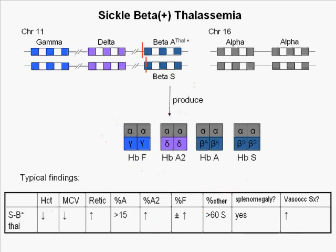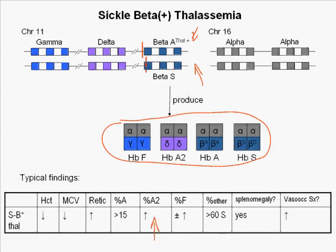In sickle beta plus thalassemia, one beta globin gene carries a mutation that reduces its production of beta globin and the other has the sickle point mutation. Four hemoglobins are produced: slightly elevated amounts of hemoglobin A2, variable but somewhat elevated levels of fetal hemoglobin, relatively small amounts of hemoglobin A, and the rest sickle hemoglobin.